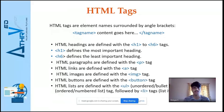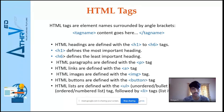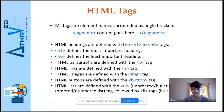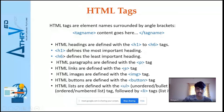HTML tags are the element names surrounded by angle brackets. You can see the opening tag name and the closing tag name — both are required for the content within. Opening and closing tag names should be the same; the difference is the forward slash in the closing tag. Different tag names perform different functions. Commonly used tags include H1 to H6 for headings (most to least important), P for paragraph, A for anchor/linking, IMG for adding images, and button tag.